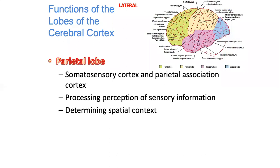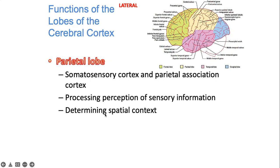Your parietal lobe is the part of the cerebral cortex responsible for your somatosensory cortex — how your body senses things. It is also your association cortex; it processes perception of sensory information. For example, when you touch a soft object, your skin senses the object, but it's your parietal lobe that tells you the object is soft. It is also important in determining spatial context.